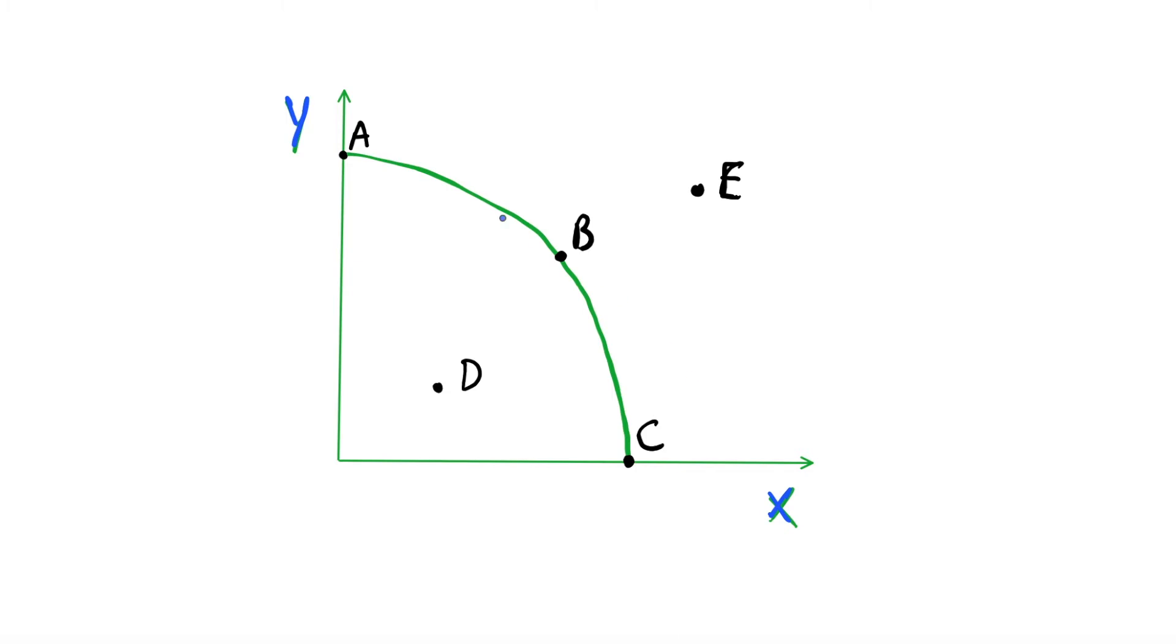On our axes we're going to have a different good. So instead of just saying good y, we could say that on the y-axis we have, let's say, pens, we are producing some amount of pens on the y-axis, and on the x-axis we can just say, let's say, pencils. So these two goods, they may be produced in the same type of factory, they're very similar to each other, but there's going to be a maximum number of pens and pencils that we can produce in our economy, and we're going to have to trade off our production of these two goods.